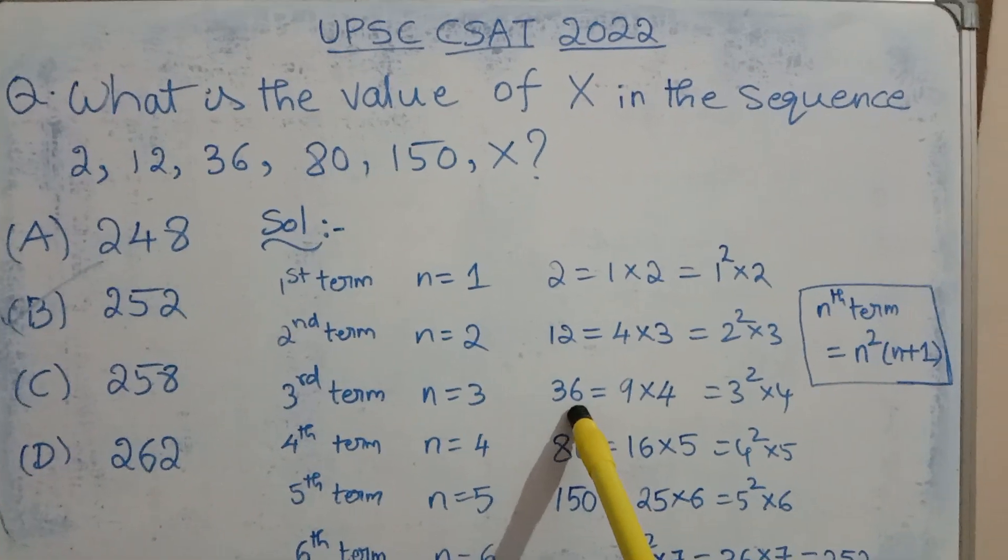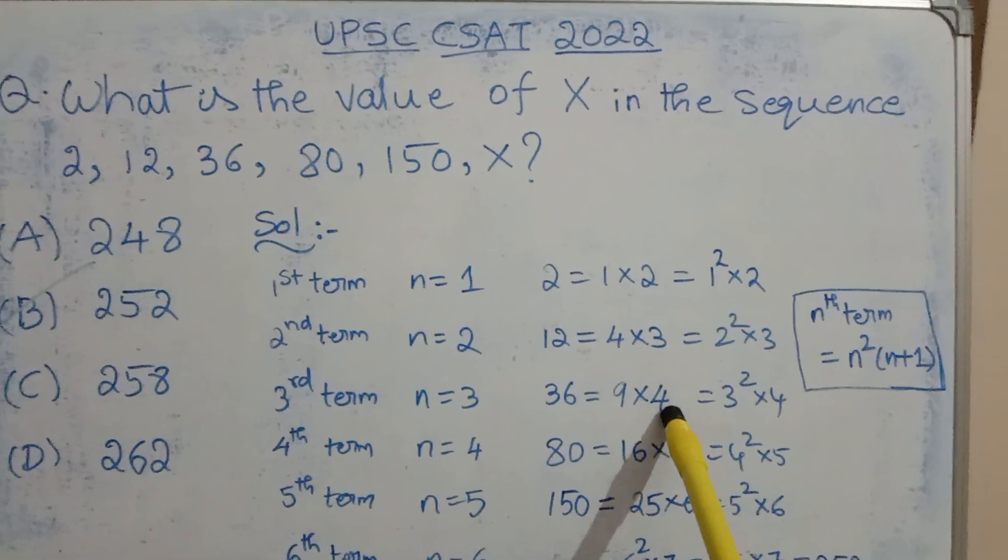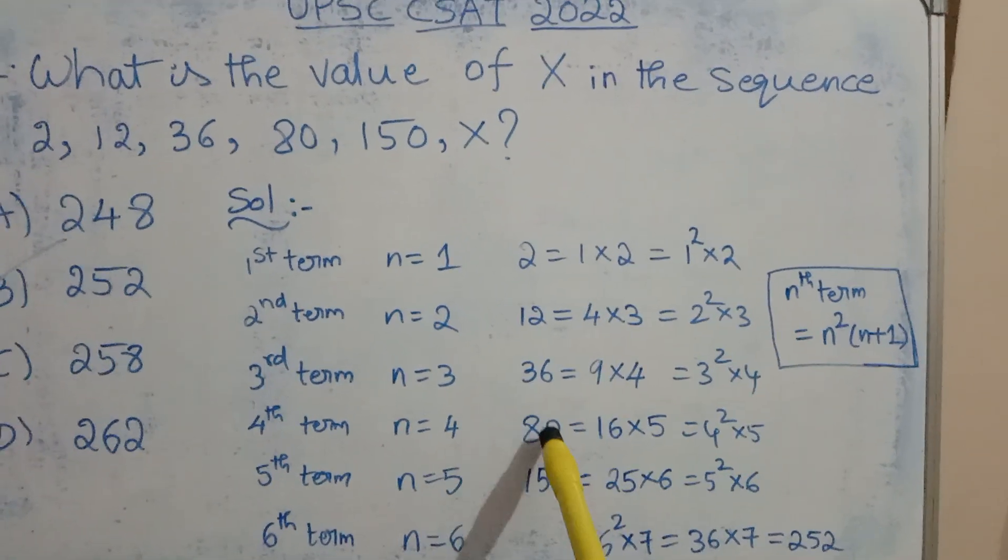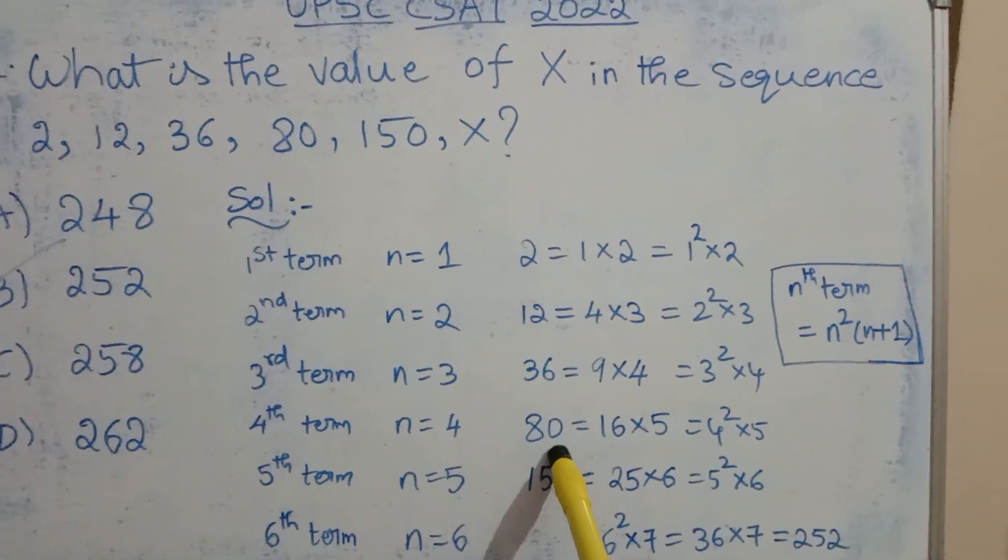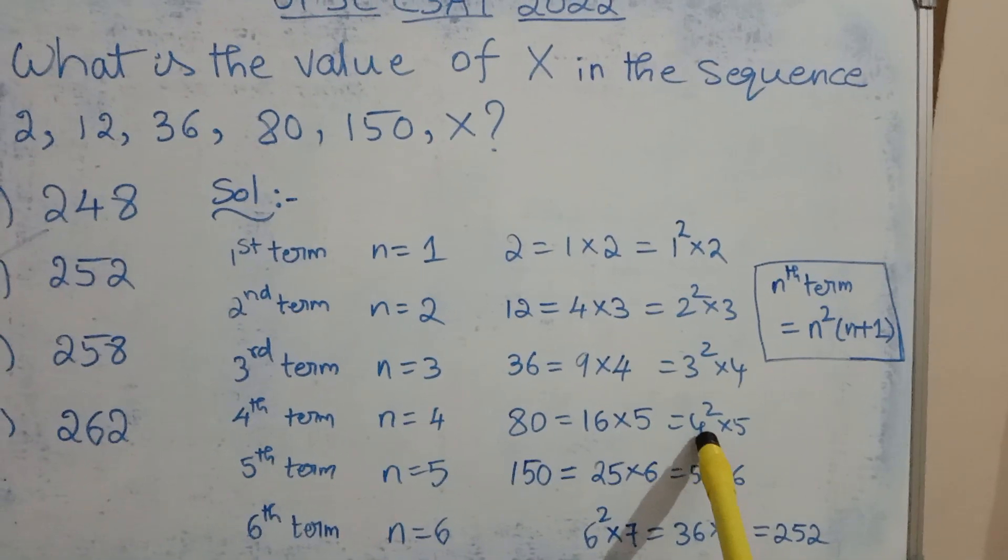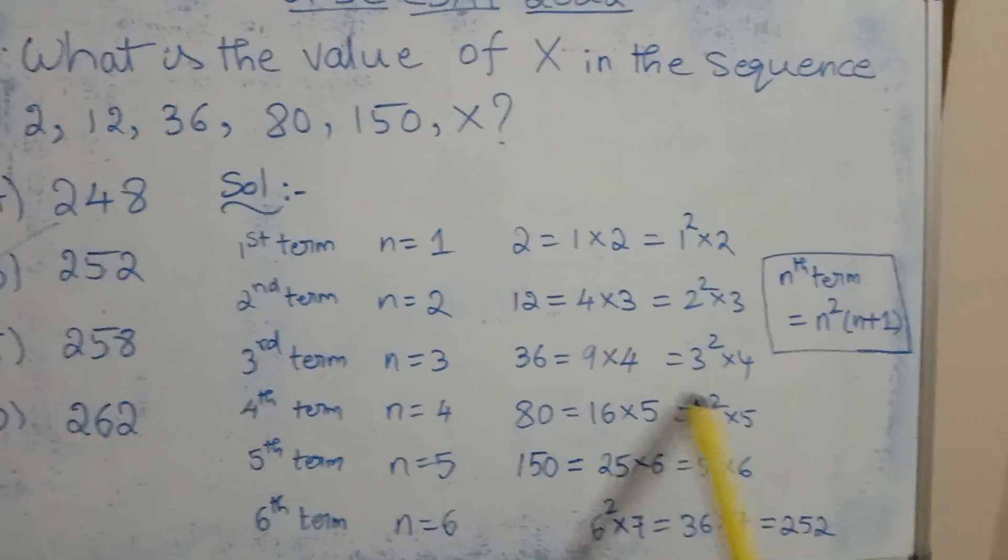Third term 36 can be written as 9 x 4 which is 3 square x 4. Fourth term 80 can be written as 16 x 5 which is 4 square x 5.